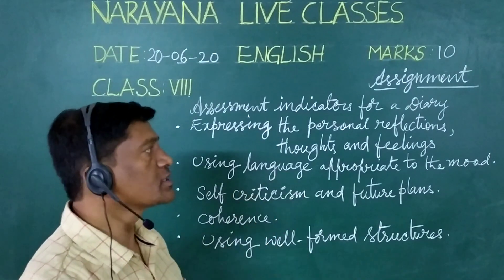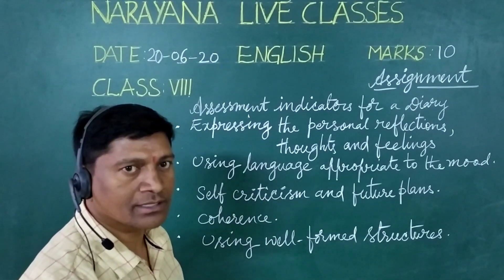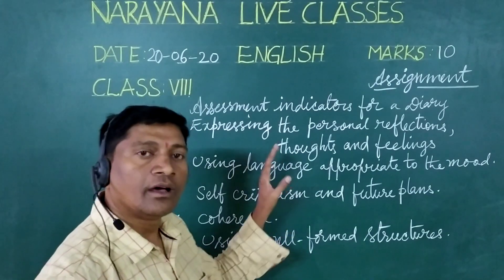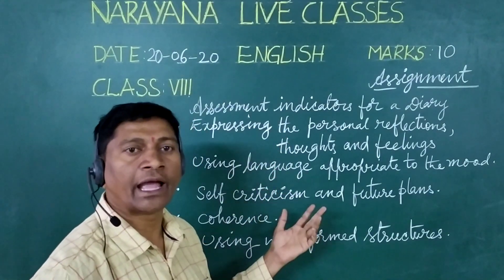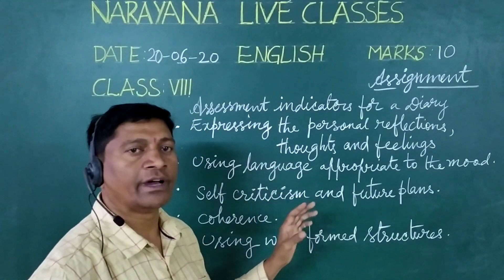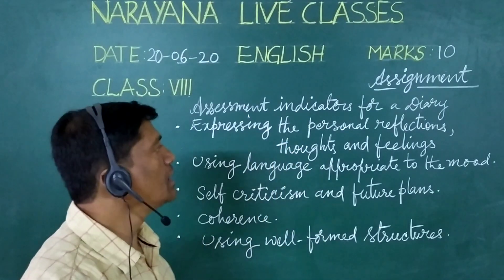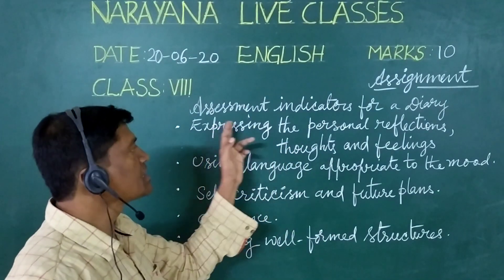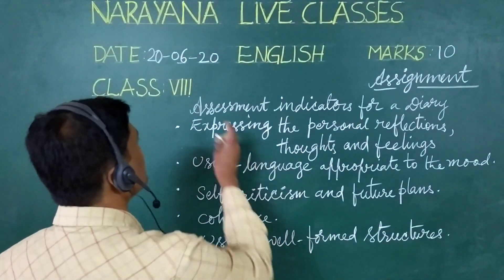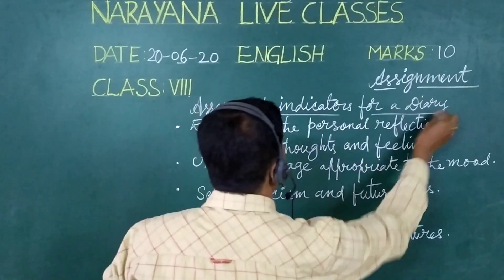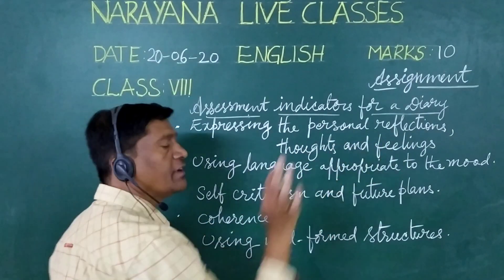In this question paper they had given 2 diary entries. First I will discuss the assessment indicators for the diary, later I will go for one model. So once you look at the board — here are the assessment indicators for a diary. This is expressing the personal reflections, thoughts and feelings.